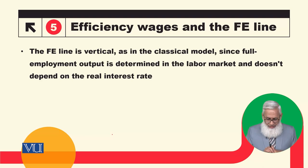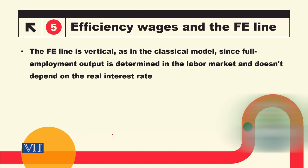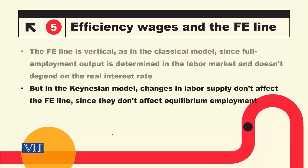The FE line is vertical in both the classical and Keynesian models, since full employment output is determined in the labor market and does not depend on the real interest rate. But in the Keynesian model, changes in labor supply do not affect the FE line, because the employment level is determined by the labor demand curve, not the labor supply curve.